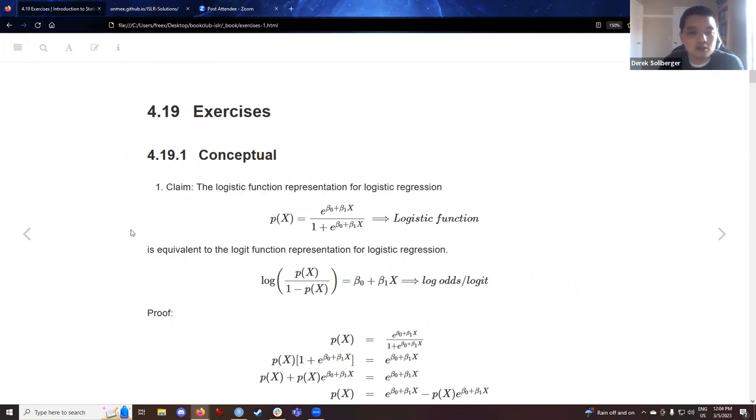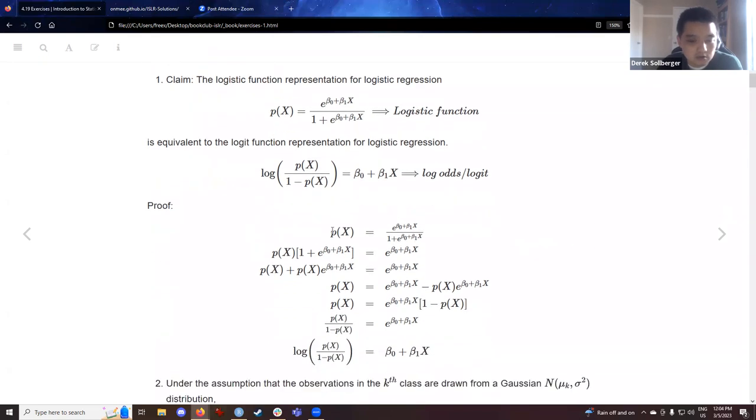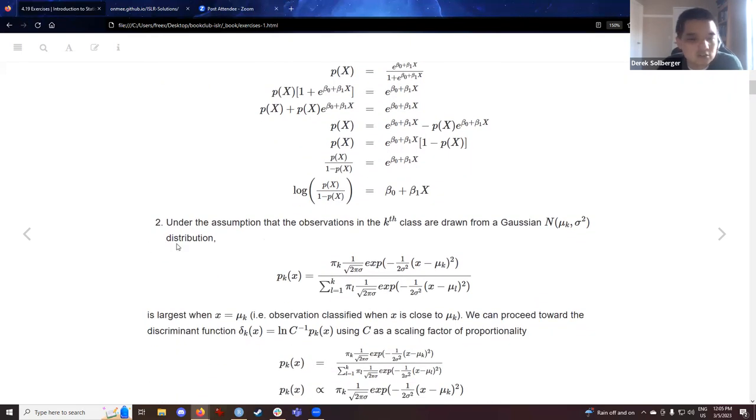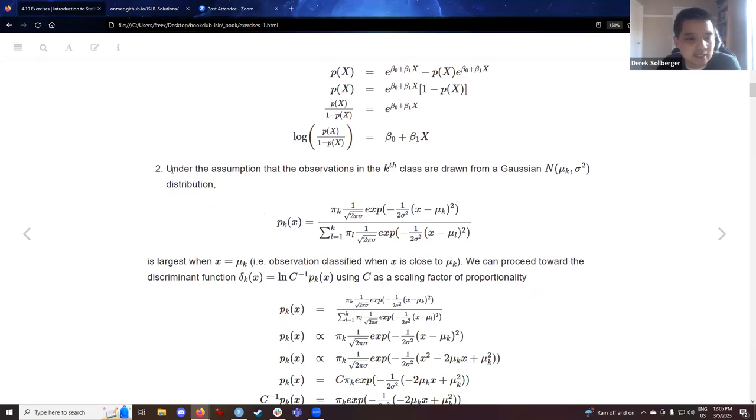The first question was double checking if the equations really did connect with each other. Here we're asking if the logistic function representation for logistic regression, which we recognize here, is equivalent to the logit function representation. Quickly going through and arranging both sides, here I offer the proof. For the sake of time and civility, I don't think we need to read every line of the proof, so we'll move on.